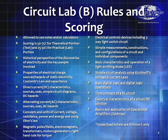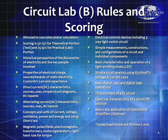You'll need to know history at a very high level, properties of electrical charge, DC or direct current characteristics, AC characteristics, concepts and units of current, voltage, and resistance, information about magnetic poles and fields. You'll need to know about how light switches work, how to do simple measurements, basic characteristics and operation of light-emitting diodes (LEDs). Simple circuit analysis using Kirchhoff's voltage laws is possible for Division C only — as shown by being underlined — along with basic digital logic, RC circuits, electrical characteristics of a silicon PN junction, and the basics and application of operational amplifiers.